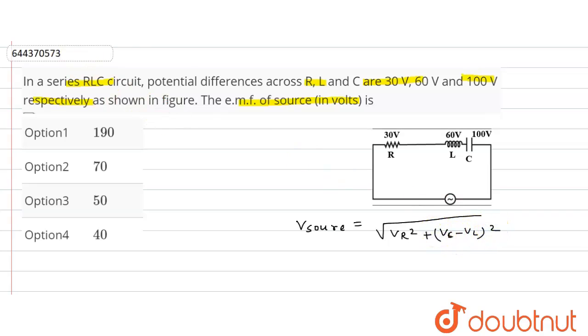Okay, and VR is given how much? Here VR is 30. So now put the value here.